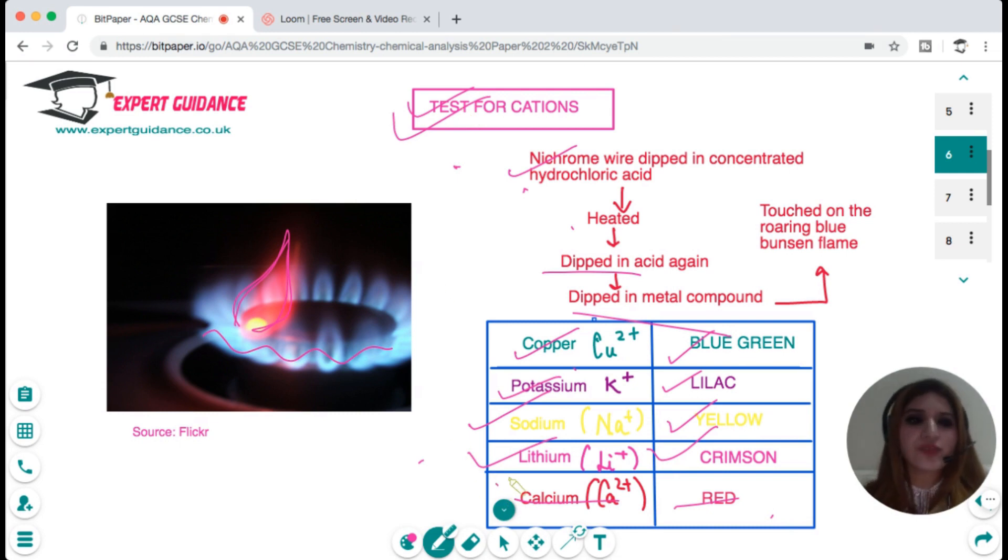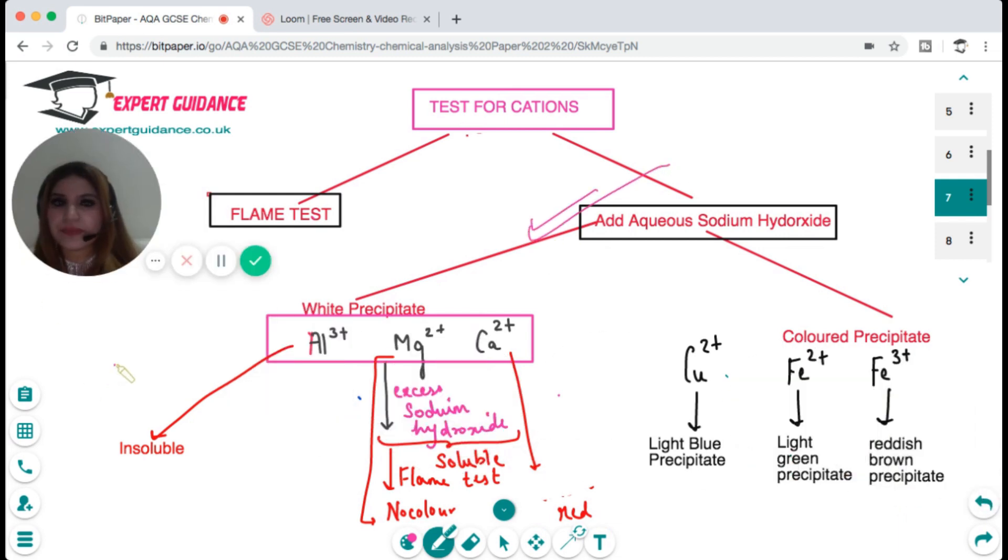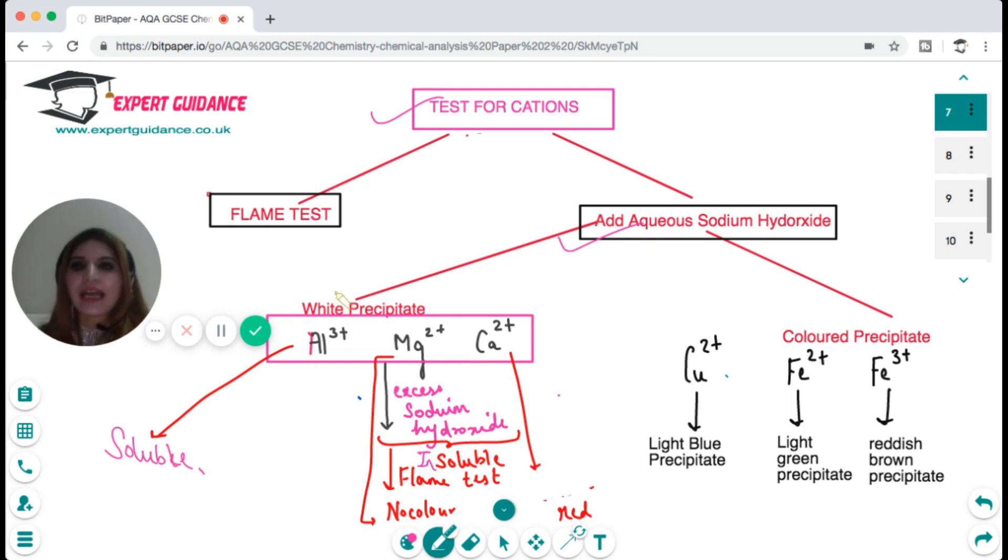There are certain metal ions which are not distinguishable by this flame test. So we have an alternative test which is we add aqueous sodium hydroxide and see the precipitate. Whenever we add aqueous sodium hydroxide we either see a white precipitate or a colored precipitate. If there's a colored precipitate of blue color it is copper. If it is light green it is iron 2+, and if it is reddish brown it is iron 3+.